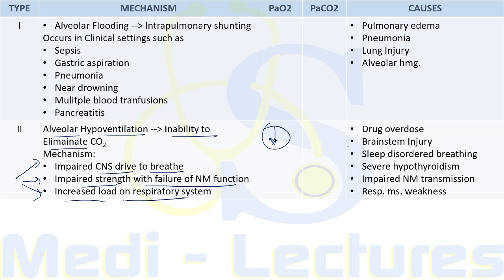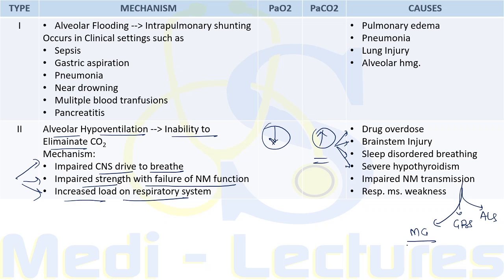Causes of Type 2 include impaired CNS drive such as drug overdoses, brainstem injury, sleep-disordered breathing, and severe hypothyroidism. Impaired neuromuscular transmission includes myasthenia gravis, Guillain-Barré syndrome, and amyotrophic lateral sclerosis. Respiratory muscle weakness can be seen in myopathies, electrolyte derangements, and fatigue.